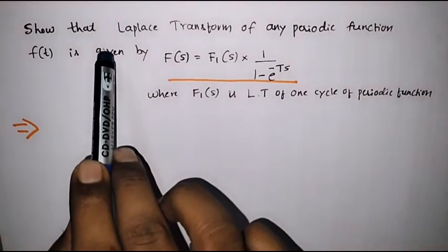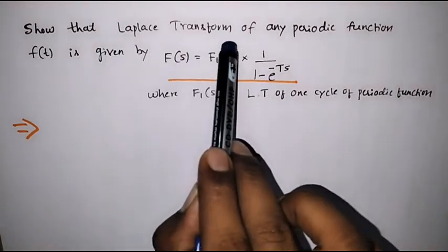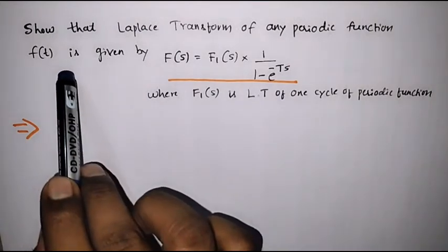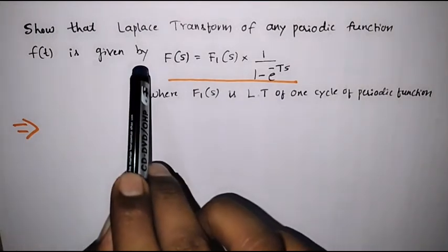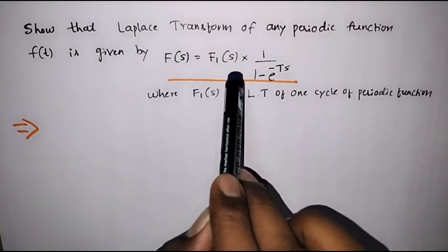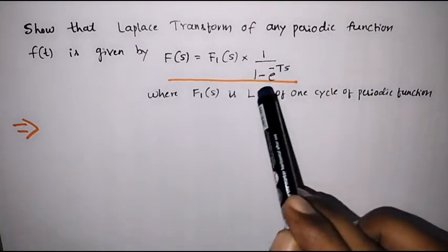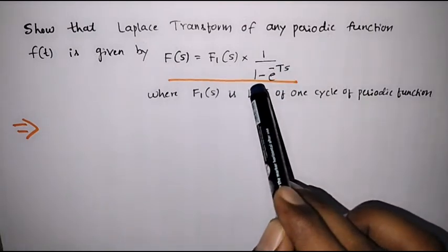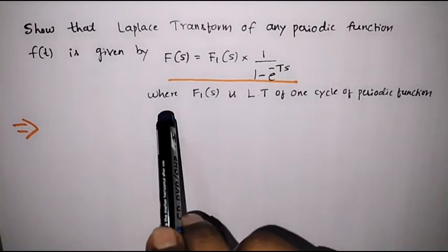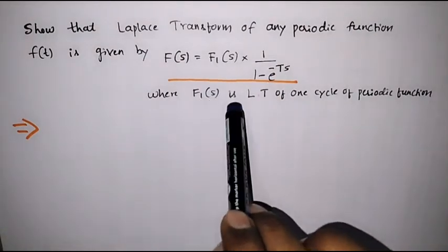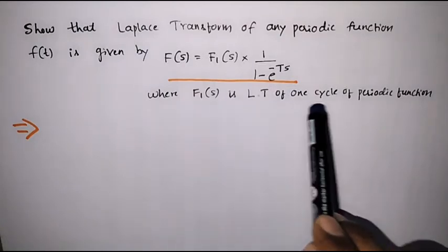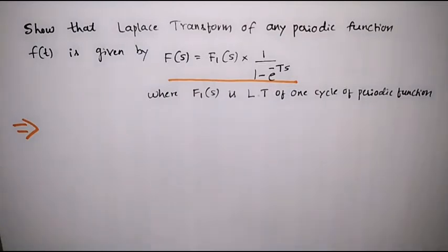We will show that the Laplace transform of any periodic function f(t) is given by F(s) = F1(s) multiplied with 1 over (1 minus e to the power minus Ts), where F1(s) is the Laplace transform of one cycle of the periodic function.